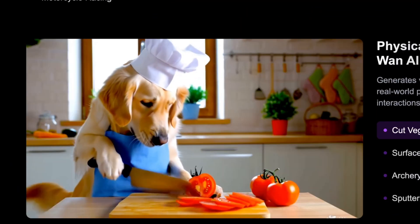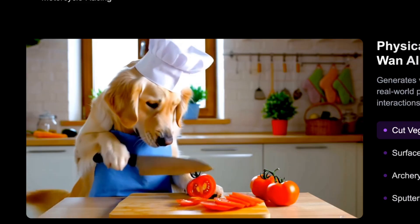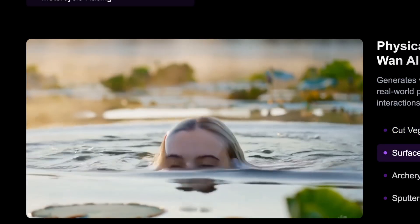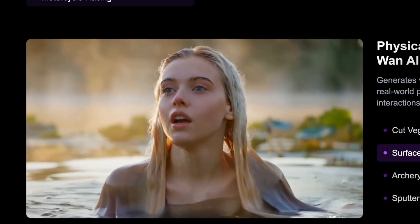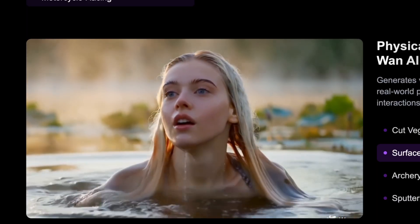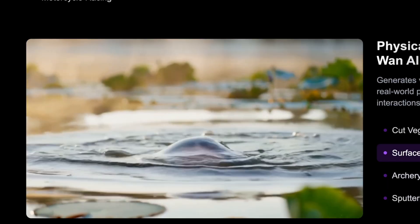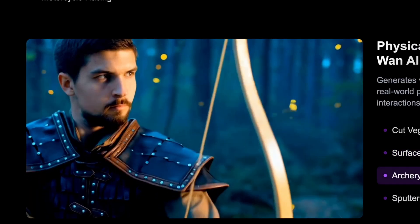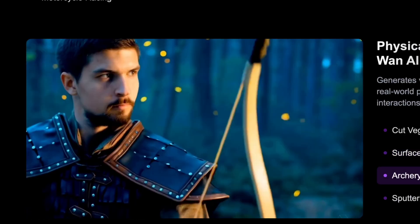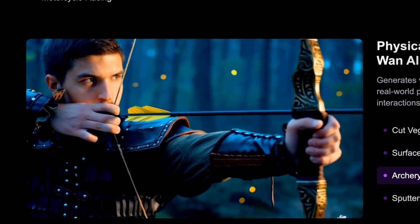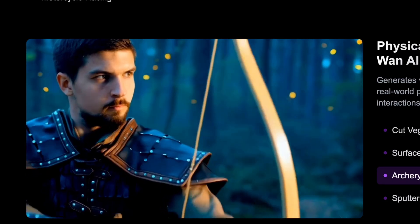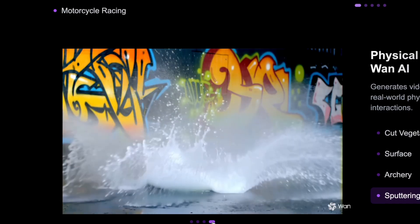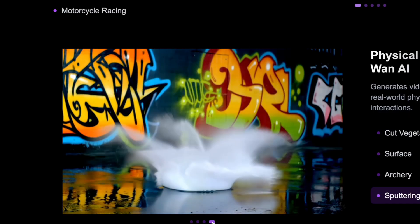We also have physical simulation. First, we have a dog chopping tomatoes and it looks exactly real — the slices are falling down, very realistic. Then we have a girl coming out of the water. Just look at the realism — look at her hair, look at the water particles that behave exactly like water. This was nearly impossible to achieve even one month ago. We also have this archer — look at the string when he's holding it. It all looks very realistic. And lastly we have a water balloon breaking down — again, very realistic.